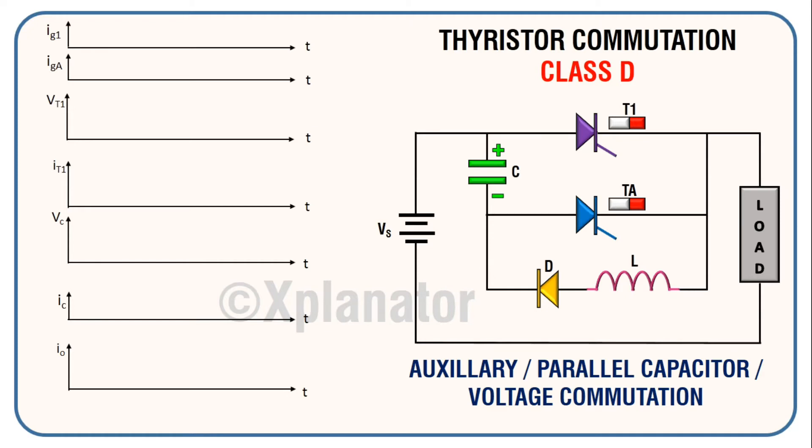When the main thyristor T1 is switched ON, current flows in the outer circuit consisting of load as well as the inner circuit which has components like inductor, diode and capacitor. Due to this current flow, the capacitor voltage gets nullified and it charges with reverse polarity.